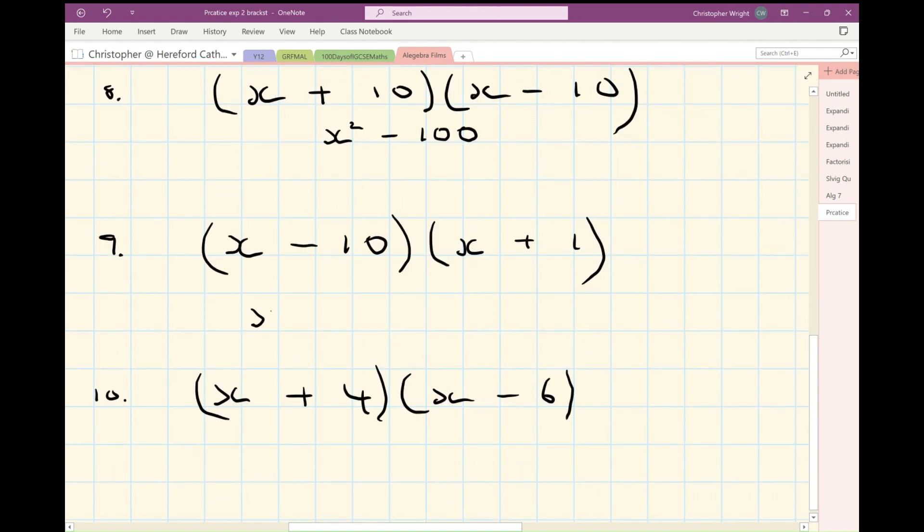Number nine. I'm going to have x squared. Now, I've got minus ten x from the nose, plus an x gives me minus nine x. And then I get minus ten times plus one, which is just minus ten at the end.